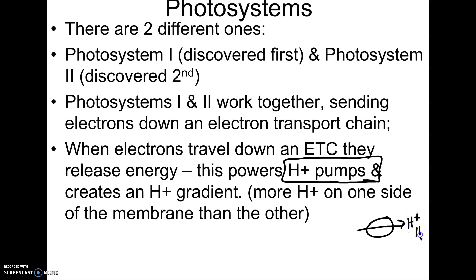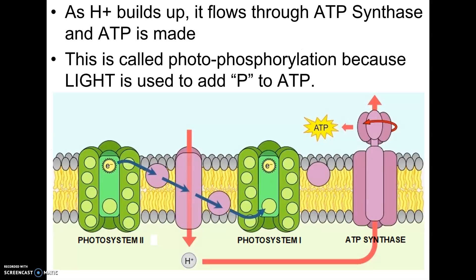Pumps pump things from lower to higher concentrations. So hydrogen ions are going to build up on one side of this thylakoid membrane. And that is an electrochemical gradient. And the reason why that's important is because that electrochemical gradient is going to now be used to make ATP.